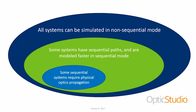The big blue circle in the background represents non-sequential mode — in theory, all systems could be simulated in non-sequential mode. But some systems have sequential paths, meaning there's a primary path the light follows, so they'll be modeled much faster in sequential mode. If it's possible to start in sequential mode, you always should because of the significant time savings. Thirdly, there are some sequential systems that require physical optics propagation — systems where rays do not adequately describe the way light propagates, such as a laser beam propagating over a very long focal length, or simulating diffraction effects after a pinhole.